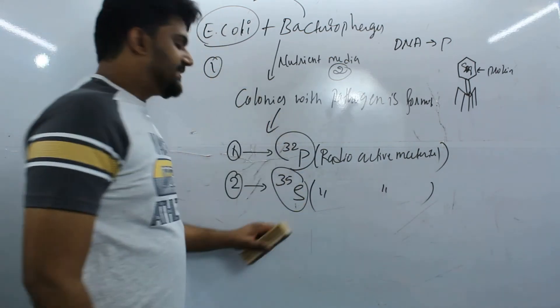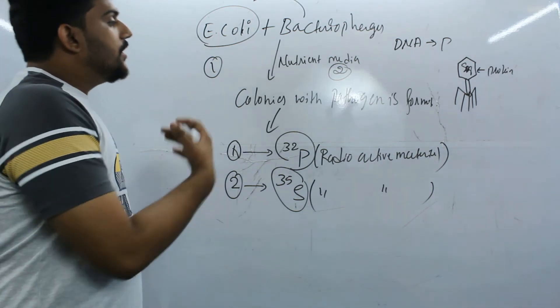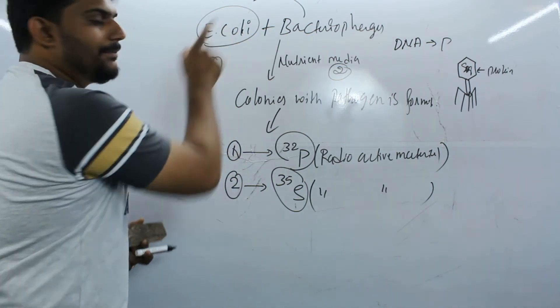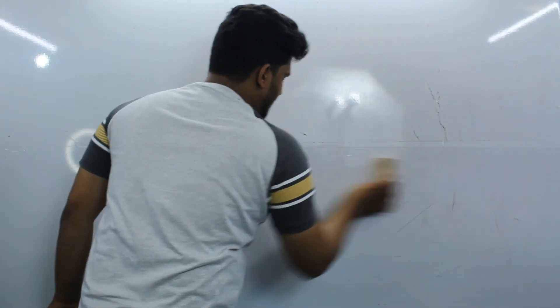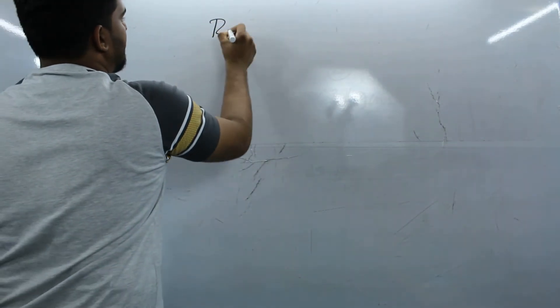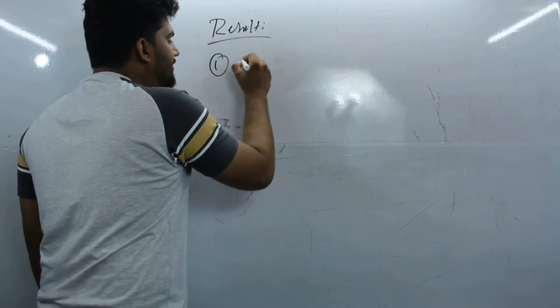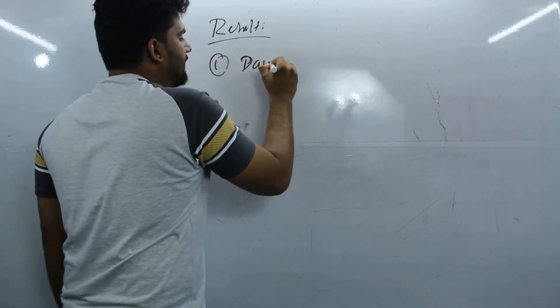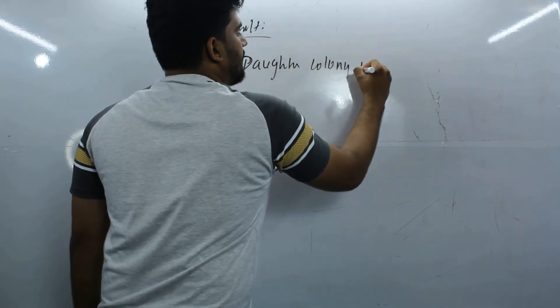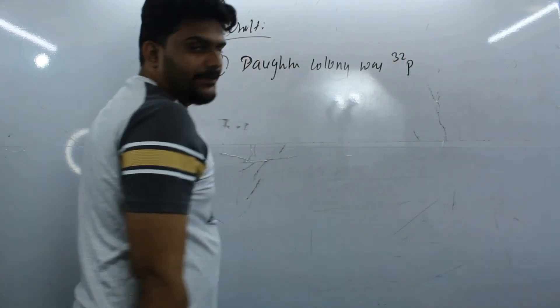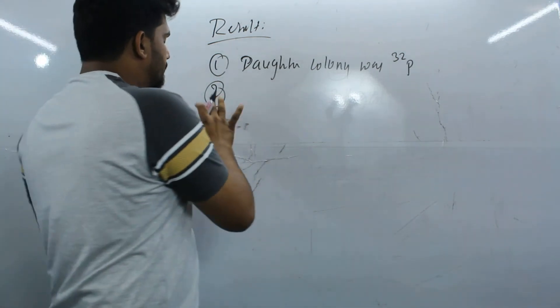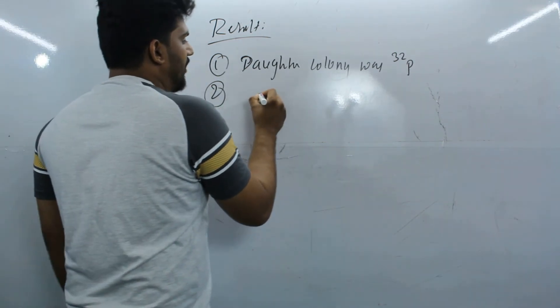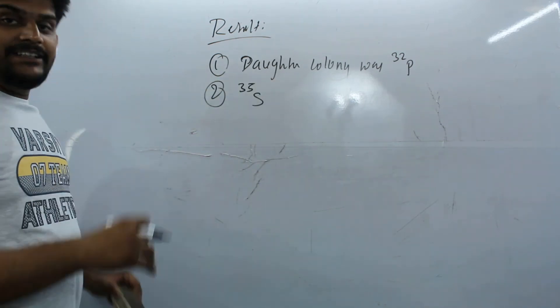Now what happens in the next stage? It's time for results. The experiment result: till now we learned the procedure. First, in the first daughter colony there was radioactive isotope P-32, and in the second colony there was absolutely no sign of S-35.